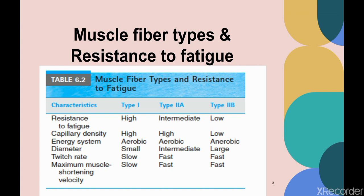In terms of diameter, Type 1 fibers have a small diameter, Type 2a fibers have intermediate diameter, and Type 2b has large diameter. For twitch rate, only Type 1 fibers have a slow twitch rate, while Type 2a and 2b have fast twitch rates. Maximum muscle shortening velocity: Type 1 has low velocity and Type 2a has fast velocity.